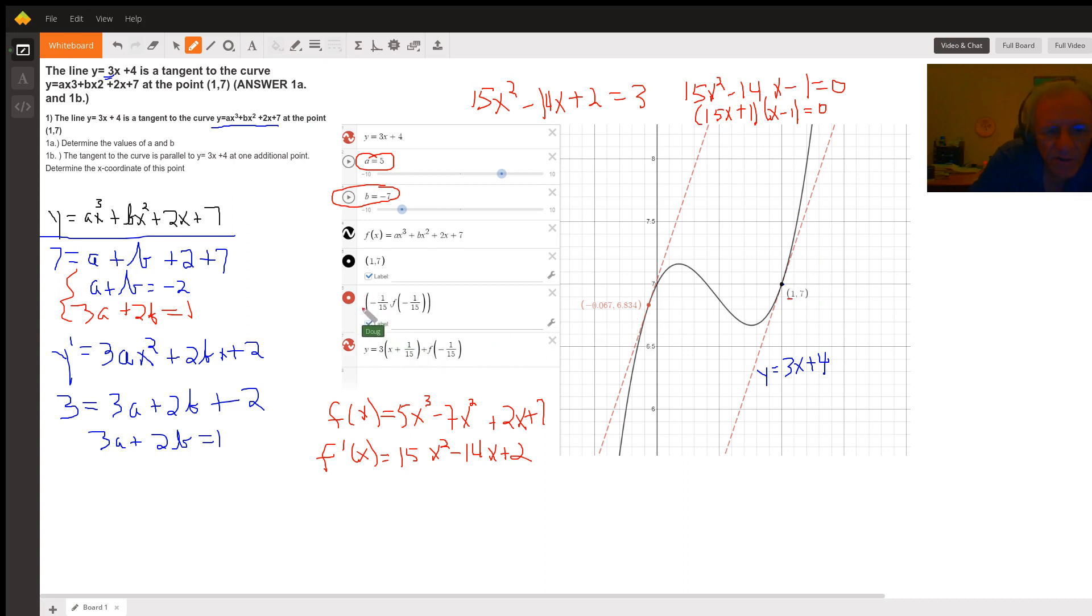Which is this point right here. So the answer to part b is negative 1/15, the x coordinate of a point on the curve that also has a tangent line with a slope of 3.